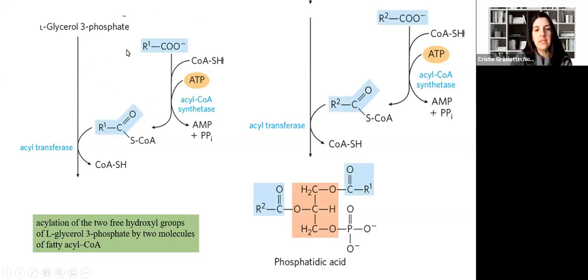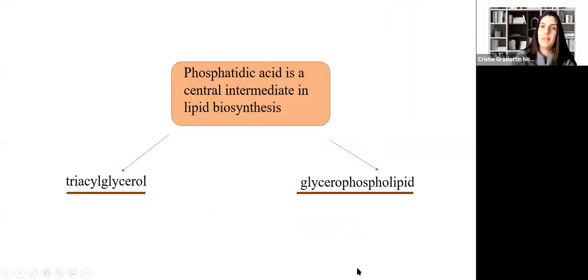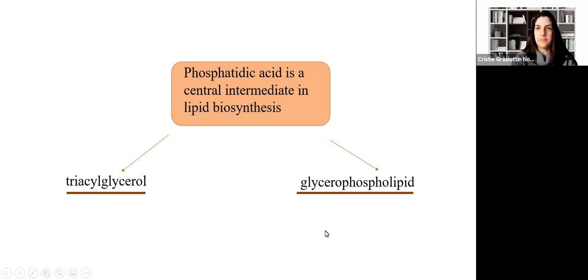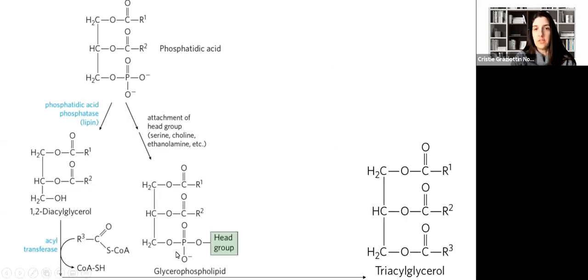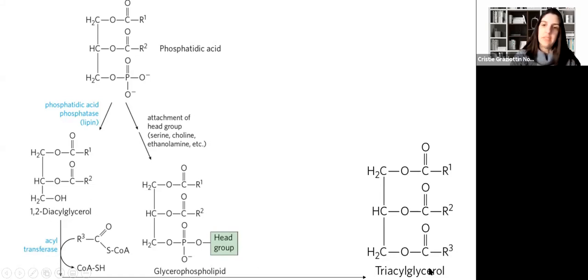Once we have glycerol-3-phosphate, through the process of acylation of the two free hydroxyl groups of glycerol-3-phosphate by two molecules of fatty acyl-CoA, we can produce phosphatidic acid. Phosphatidic acid is the central intermediate in lipid biosynthesis. From this compound, we can produce either triacylglycerol or glycerophospholipid. To produce a glycerophospholipid, there will be attachment of a head group — which could be serine, choline, or ethanolamine. To produce triacylglycerol, through the action of acyltransferase, 1,2-diacylglycerophospholipid is transformed into triacylglycerol.